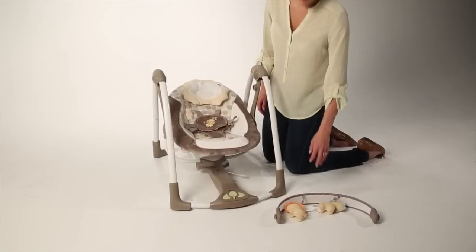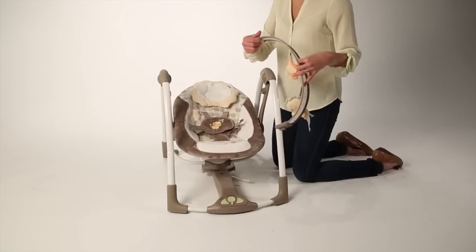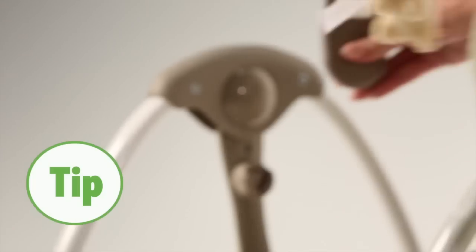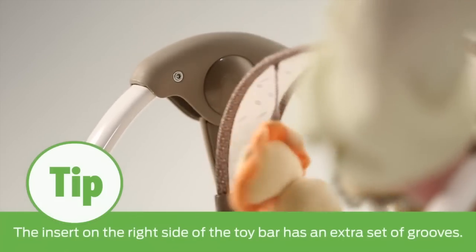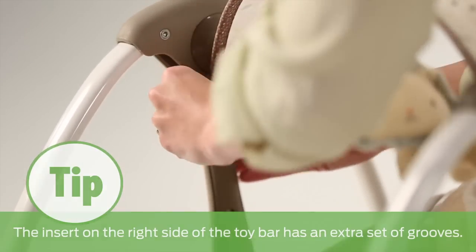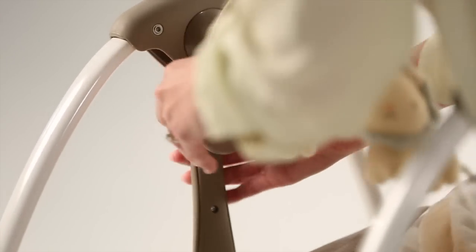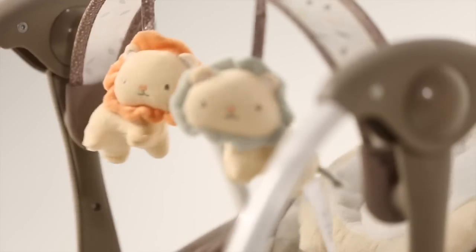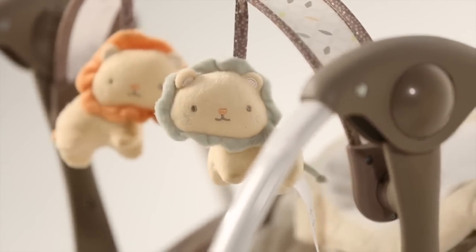Install the toy bar by first identifying the right and left sides. Tip: The insert on the right side of the toy bar has an extra set of grooves. Slide the toy bar downward from the top of the swing until it snaps into place in the grooves located at the top of the swing frame.